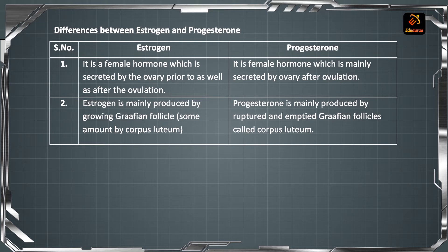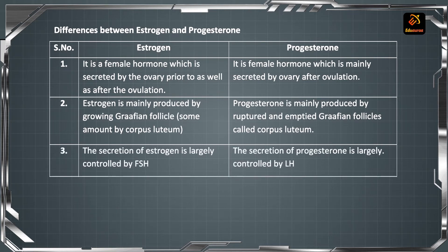Progesterone is mainly produced by the ruptured and emptied Graafian follicle called corpus luteum. The secretion of estrogen is largely controlled by FSH — Follicle Stimulating Hormone.